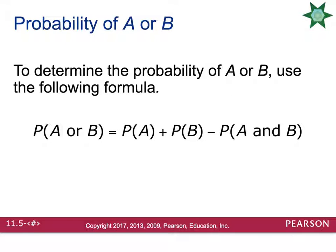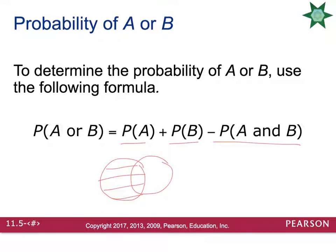To determine the probability of A or B, you first determine the probability of event A and the probability of event B, add those together, and then subtract the probability of both A and B — because that overlap is going to be counted twice. If you remember when we were dealing with Venn diagrams, the middle region got counted two times, which is why we subtract at the end so we don't get too large of a number.